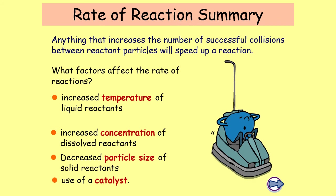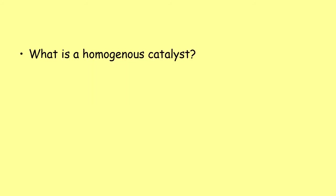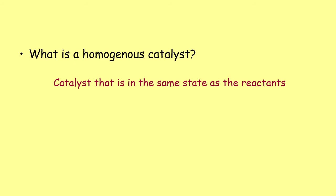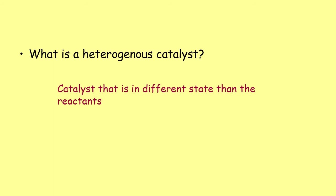So if you want to make a reaction faster, you do it hotter, more concentrated, with lower particle size, or you add a catalyst. Past paper question one: give a definition of a homogeneous catalyst. The answer is a catalyst that is in the same physical state as the reactants — for example, a solid catalyst working on solid reactants. Question two: what is a heterogeneous catalyst? A heterogeneous catalyst is one in a different physical state from the reactants — for example, a solid catalyst acting on liquid reactants.